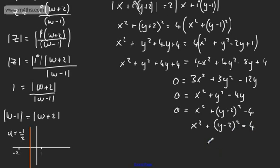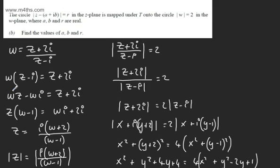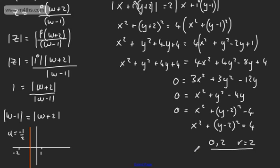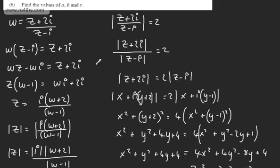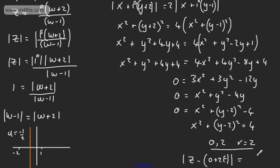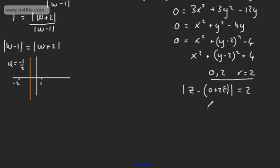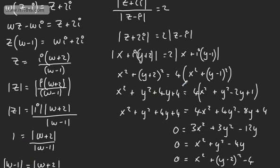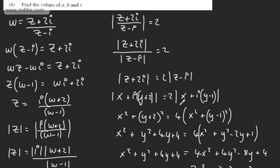In Cartesian form this gives us a circle. The equation of a circle is (x minus l) squared plus (y minus b) squared equals r squared. So we have a centre of (0, 2) and a radius of the square root of 4, which is 2. Expressing this in the required form, mod(z minus (0 plus 2i)) equals 2, giving us a equals 0, b equals 2, and r equals 2. In the exam you might want to slim some of this working down, but that's a step-by-step approach.